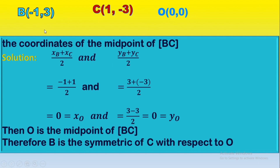What about Y? We compute (YB + YC) / 2 = (3 + (-3)) / 2. We use parentheses then multiply signs to remove them: 3 - 3 = 0, so 0 / 2 = 0, which equals YO. Therefore O is the midpoint of segment BC, and we can say that B is the symmetric of C with respect to O.